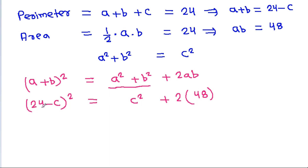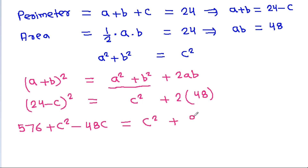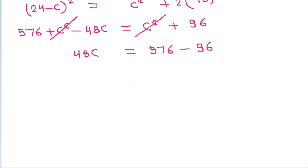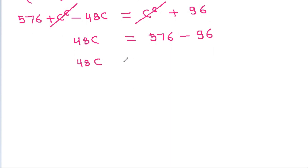Expanding: 24 squared is 576, minus 2 times 24 times C, minus C squared equals C squared plus 96. Simplifying: 576 minus 48C minus C squared equals C squared plus 96. Solving for C gives C squared plus 48C minus 480 equals zero, and from this we get C equal to 10. So A plus B equals 14.